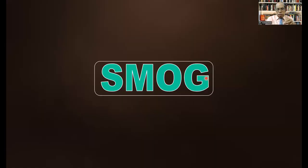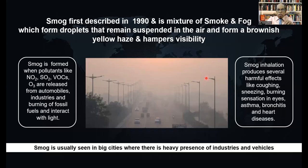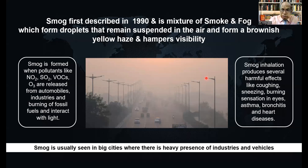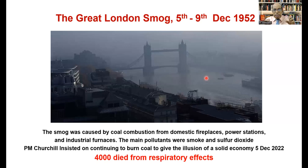Before understanding air pollution, we must also understand smog. Smog is a mixture of smoke and fog which forms droplets that remain suspended in the air and form a yellow haze, which hampers visibility and contributes to air pollution. Smog is formed when pollutants like nitric oxide, sulfur dioxide, VOCs, and ozone are released from automobile industries and burning of fossil fuels and interact with light. We witnessed the Great London Smog in December 1952, when 2,000 to 4,000 people died from respiratory effects, caused by cold combustion from various sources.